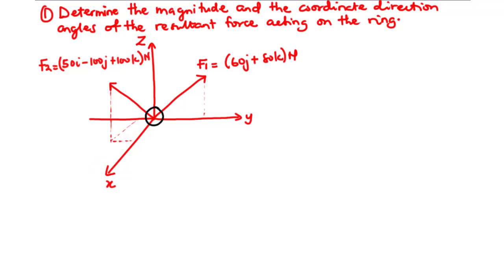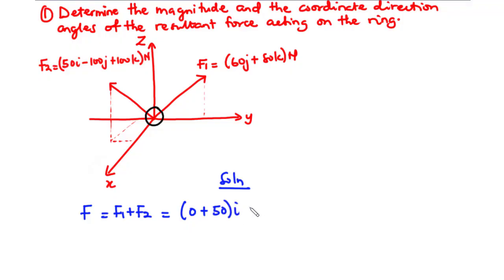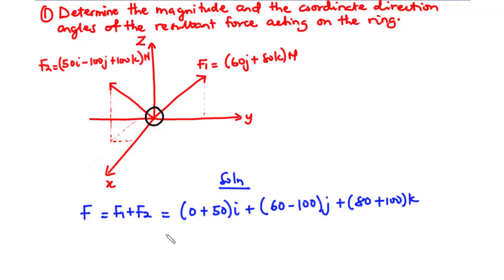Let's find the resultant of the two forces. Let the resultant force be F, so F = F1 plus F2. For the x-components: 0 plus 50 = 50i. For the y-components: 60 minus 100 = negative 40j. For the z-components: 80 plus 100 = 180k. Therefore, F = 50i minus 40j plus 180k. This is the Cartesian vector representation of the resultant force.